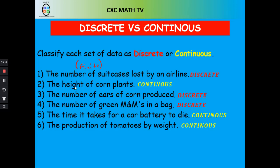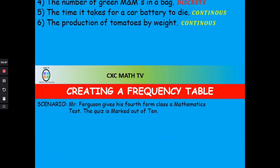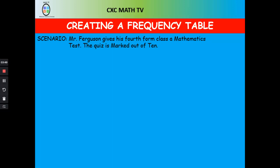The ears of corn produced is clearly discrete or finite. The number of green M&Ms in a bag — you burst the bag and count them — is also discrete. The time it takes for a car battery to die is continuous, and production by weight is also continuous. Weight and time are both continuous.